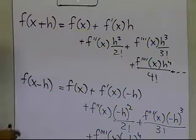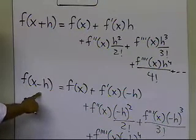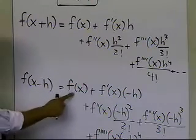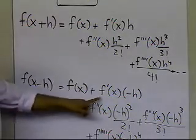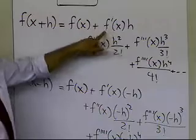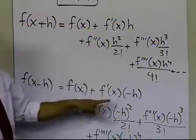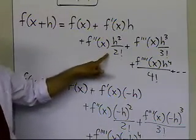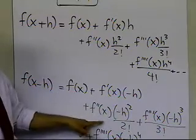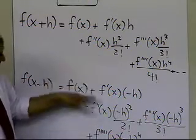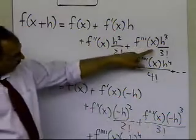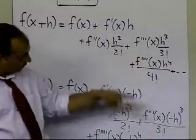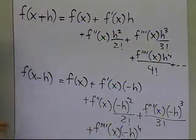What I want you to pay close attention to is that I'm going to add these two equations. The first derivative term — f prime of x times minus h — will cancel with f prime of x times plus h. However, the second derivative terms will not cancel, because minus h squared is h squared itself, so they get added up. Similarly, the h cubed term and minus h cubed term will add together and become zero.